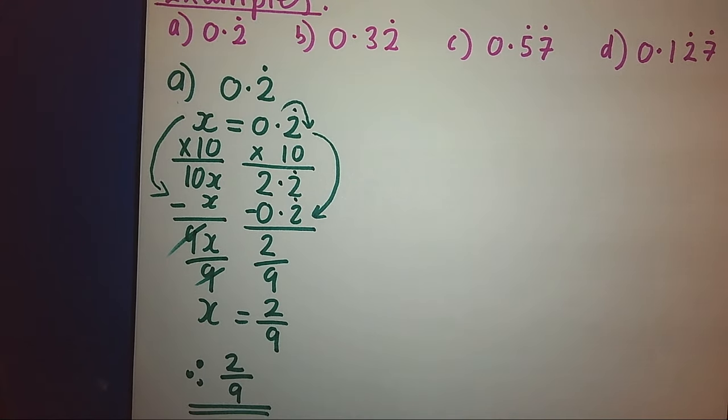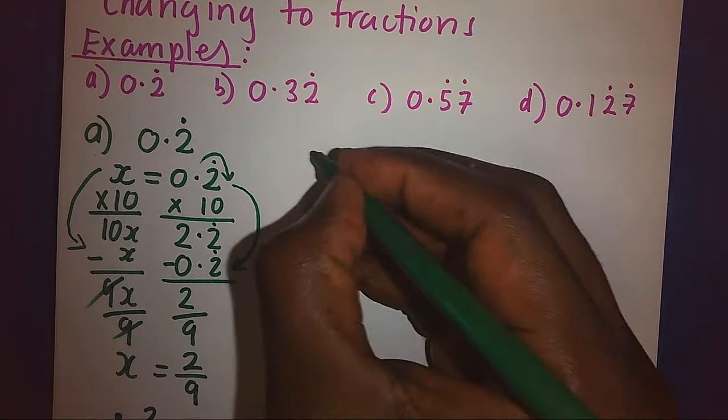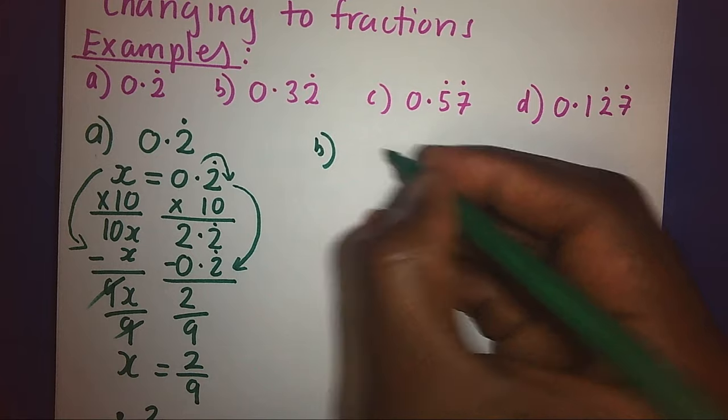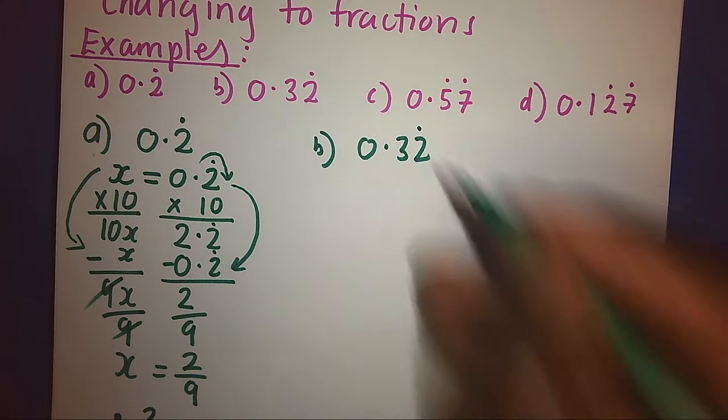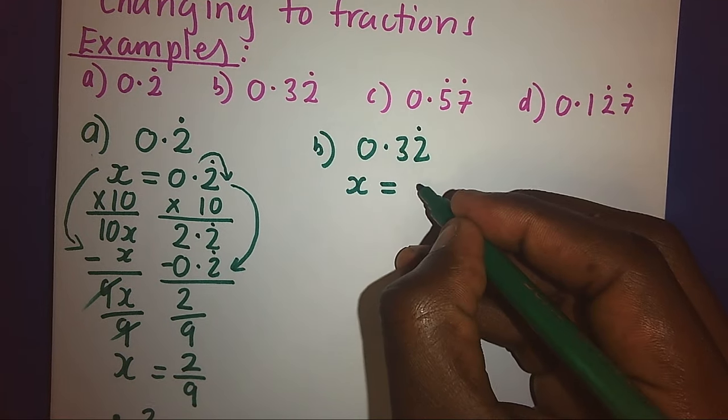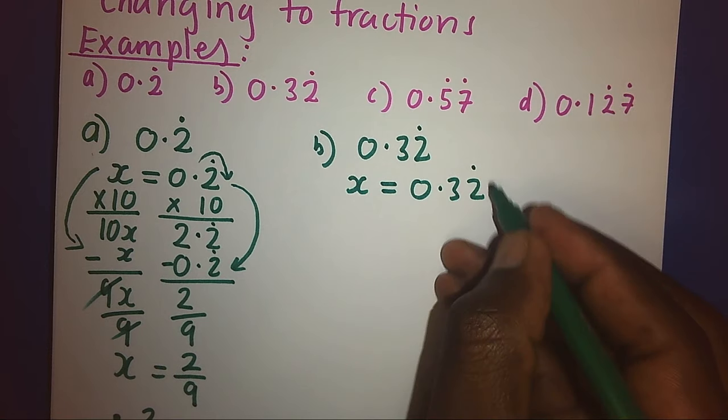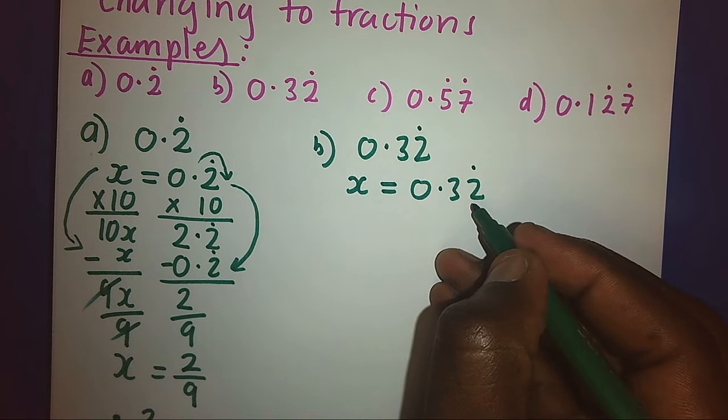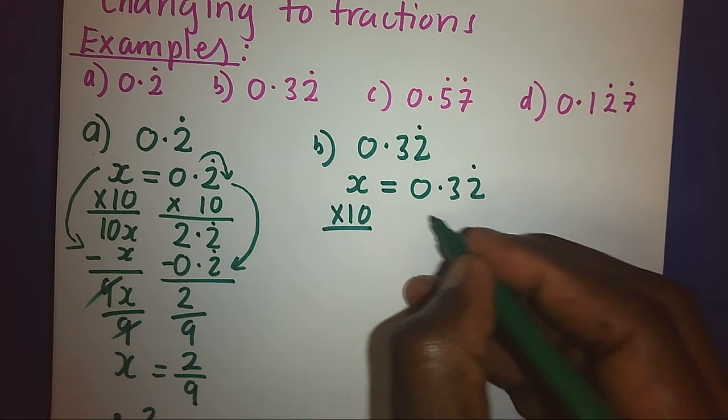Let's look at our second example, b. Our b is 0.32 recurring. So let's let x equal to 0.32. But remember, only one number is recurring. Therefore, we shall have to multiply by 10 on both sides.